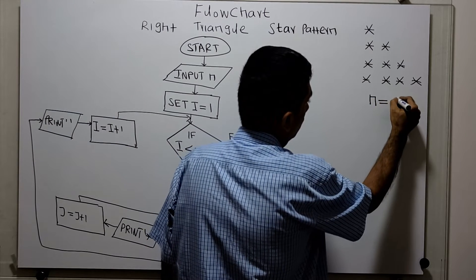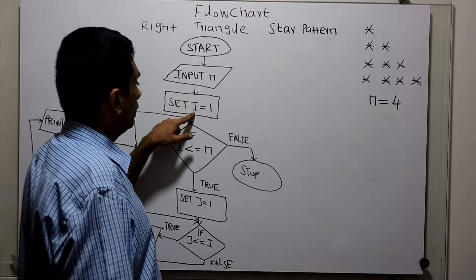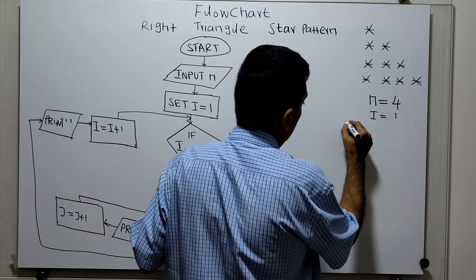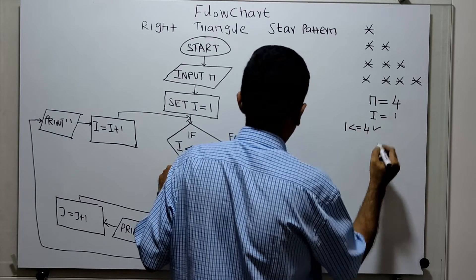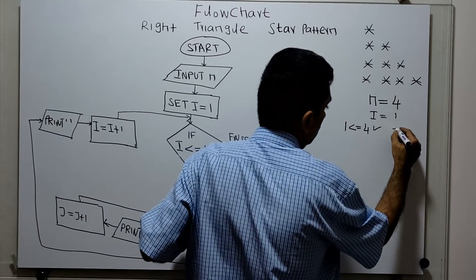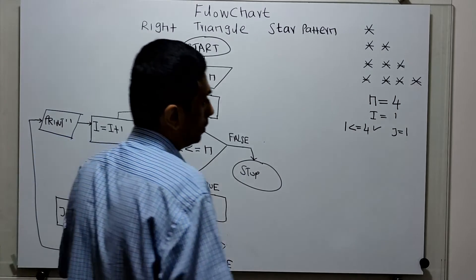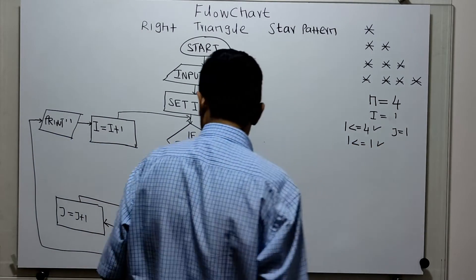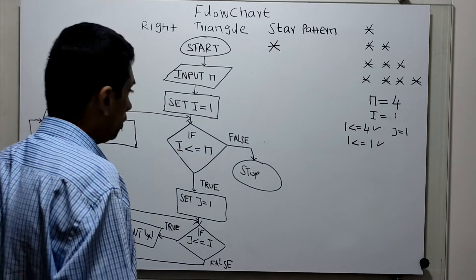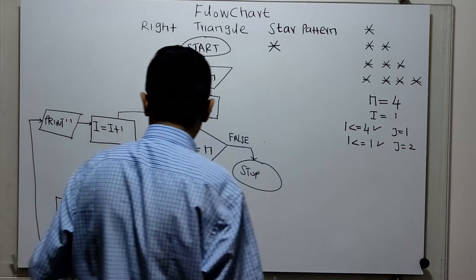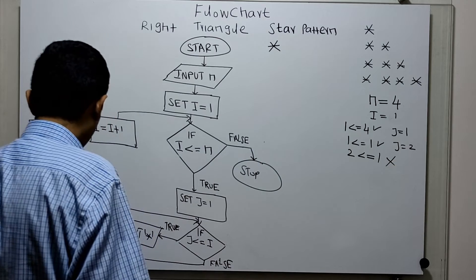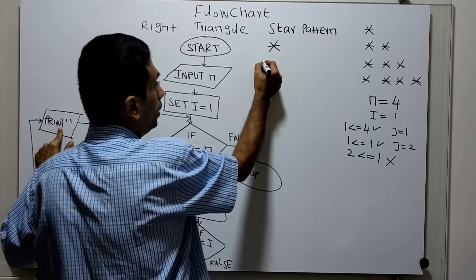Let's take a sample input: n equal to 4. I initialize i equal to 1. I check i less than or equal to n — 1 less than or equal to 4 is true. We come inside and initialize j equal to 1. Check j less than or equal to i — 1 less than or equal to 1 is true, so we print a star. Then j becomes 2. Check j less than or equal to i — 2 less than or equal to 1 is false.